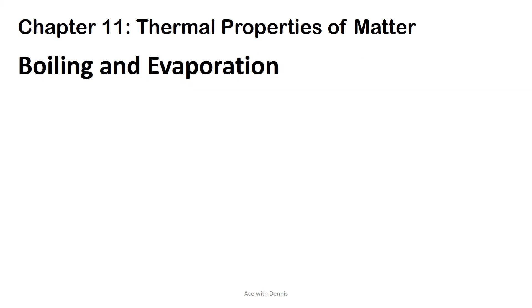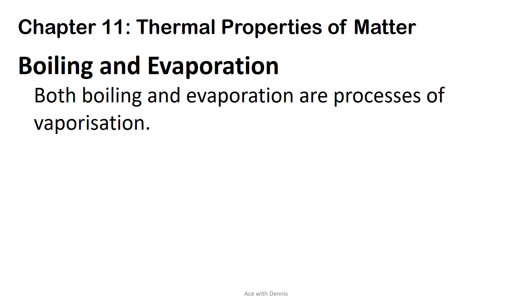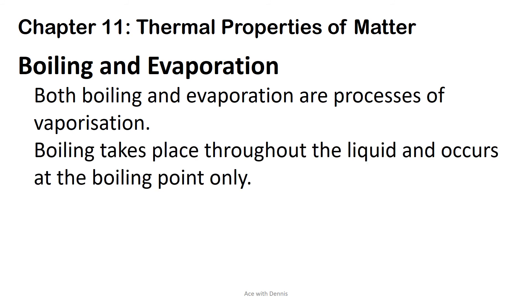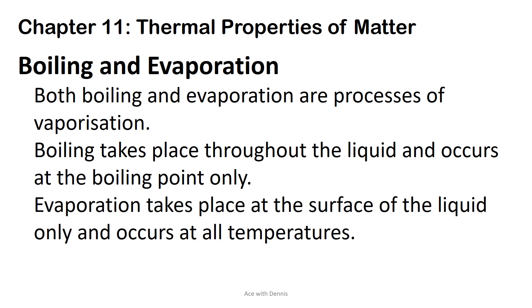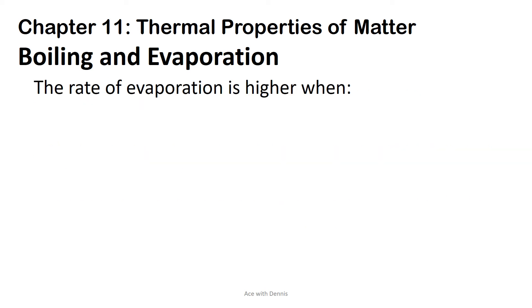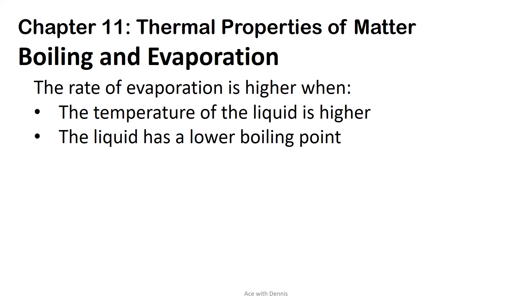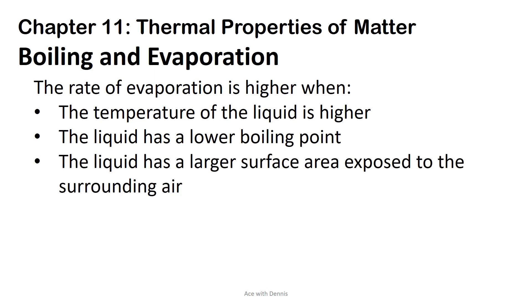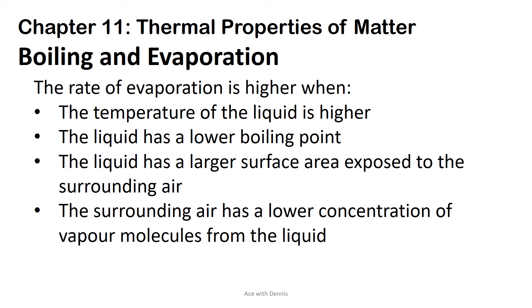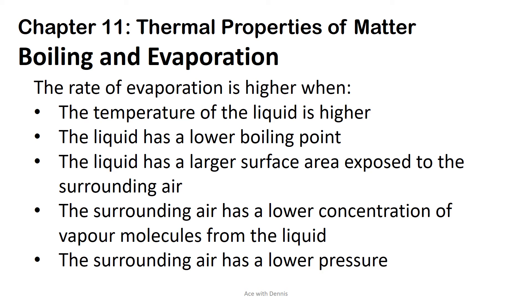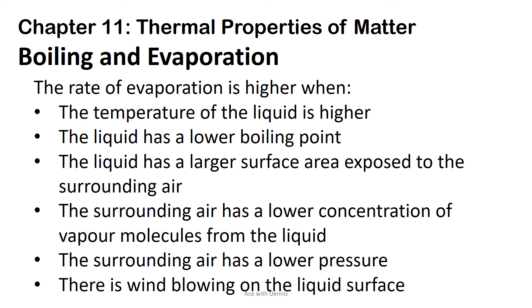Boiling and evaporation. Both boiling and evaporation are processes of vaporization. Boiling takes place throughout the liquid and occurs at the boiling point only. Evaporation takes place at the surface of the liquid only and occurs at all temperatures. The rate of evaporation is higher when: the temperature of the liquid is higher; the liquid has a lower boiling point; the liquid has a larger surface area exposed to the surrounding air; the surrounding air has a lower concentration of vapor molecules from the liquid; the surrounding air has a lower pressure; or there is wind blowing on the liquid surface.